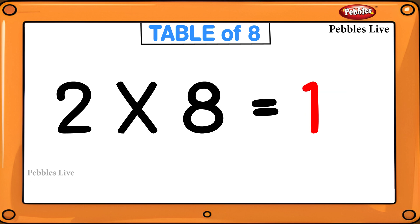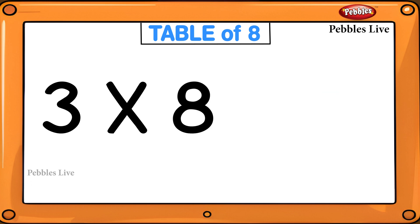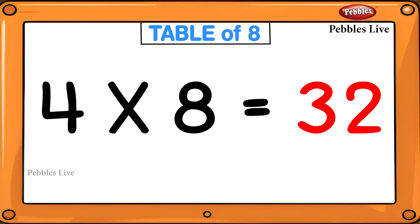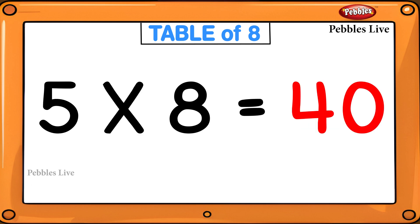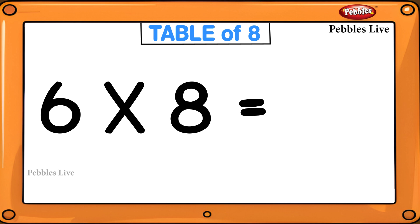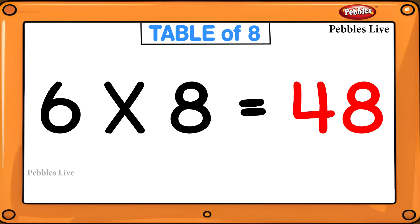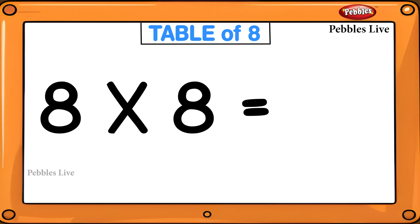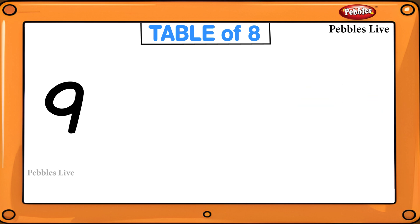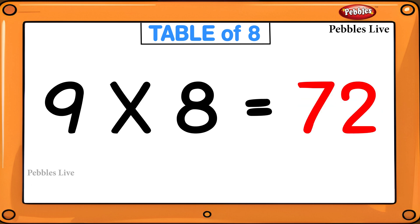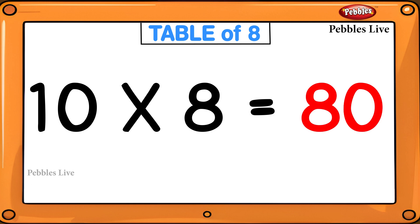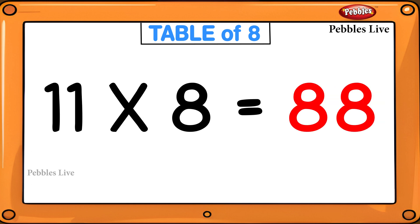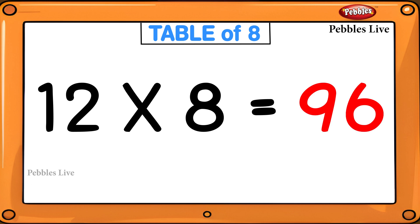1 eight is 8, 2 eights are 16, 3 eights are 24, 4 eights are 32, 5 eights are 40, 6 eights are 48, 7 eights are 56, 8 eights are 64, 9 eights are 72, 10 eights are 80, 11 eights are 88, 12 eights are 96.